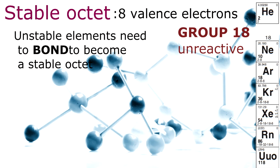Of course, excluding Group 18 and the noble gases. So keep in mind that a stable octet is eight balanced electrons found in Group 18 elements.